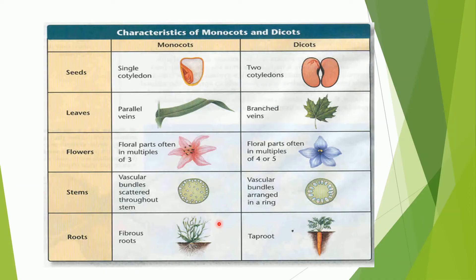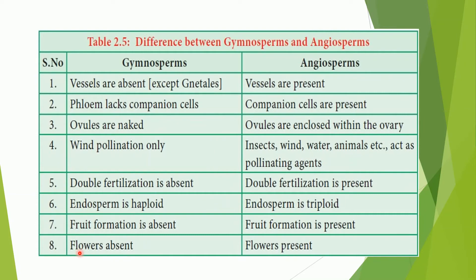So, children, we have seen how we can identify a monocot and a dicot plant. These are the major differences between monocots and dicots based on seeds, leaves, flowers, stems, and roots. Now let us look at the major differences between gymnosperms and angiosperms.